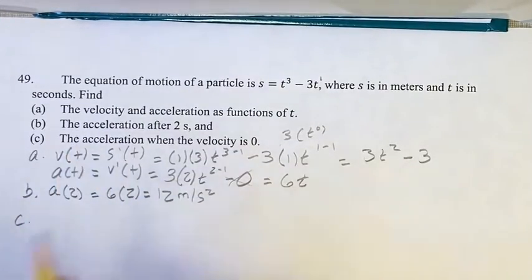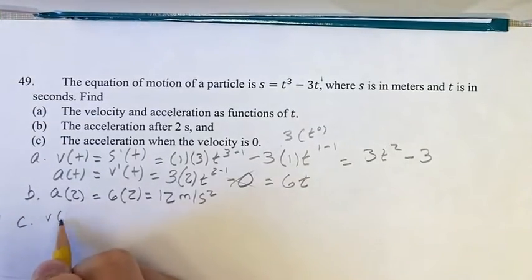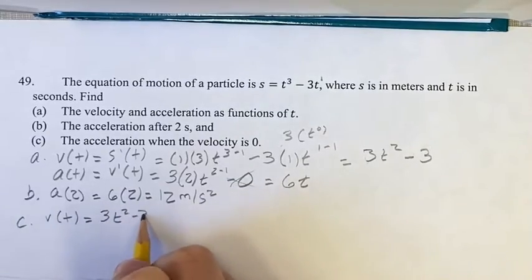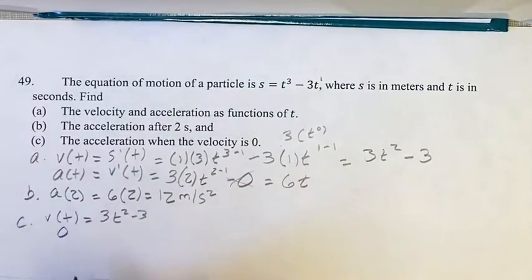In part c, looking to find the acceleration when the velocity is 0. So first of all, we have to find when is the velocity 0. So v of t is equal to 3t squared minus 3. When is this equal to 0? 0 is equal to 3t squared minus 3.